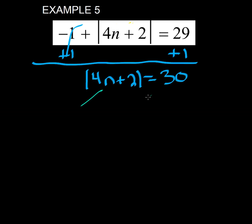Now we're going to split into two equations because that's what the absolute value bars imply. I'm going to make this positive and make this negative. So we're going to keep 4n plus 2.